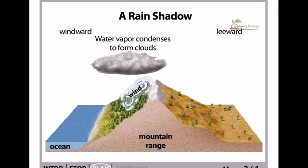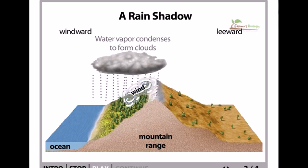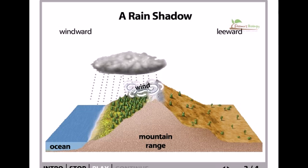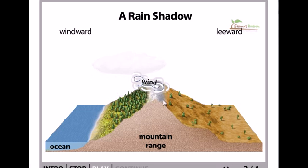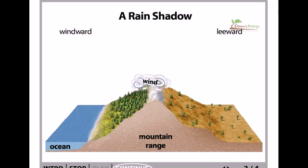When the water droplets become too large and heavy to be carried by the wind, the water falls back to earth as rain or snow. The windward side of the mountain is therefore moist and lush, as you can see in this case.